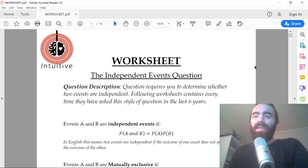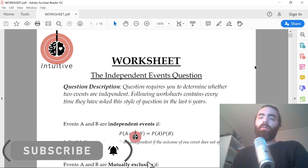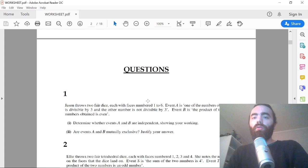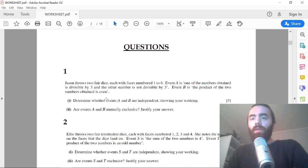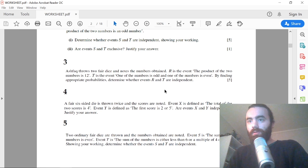Okay, let's continue in this exam hack series for S1, AS Mathematics, and today we're going to be tackling another common question, which I call the independent events question. Basically in this style of question they ask you to determine whether two events are independent. So you'll see common phrases like, determine whether A and B are independent, determine whether S and T are independent.